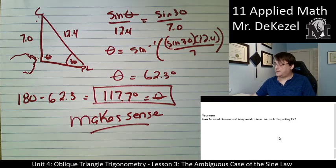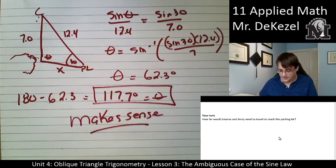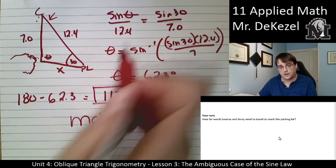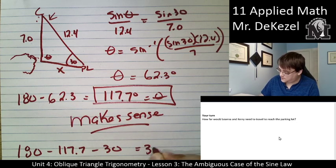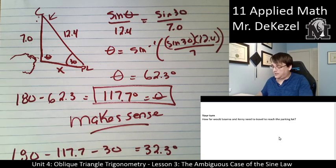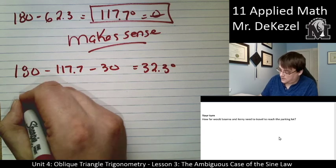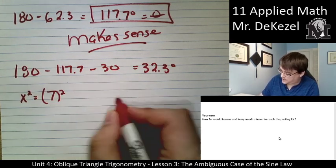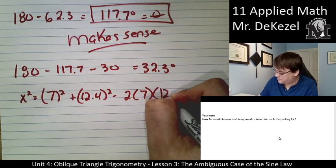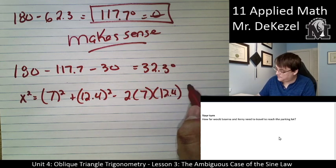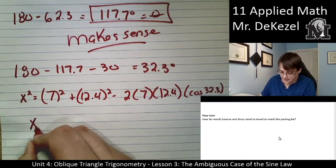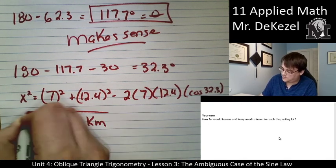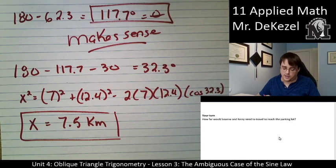Your Turn: how far do Leanna and Carrie need to travel to reach the parking lot? We find the remaining angle: 180 − 117.7 − 30 = 32.3 degrees. Using the cosine law: X² = 7² + 12.4² − 2(7)(12.4)cos(32.3°). Taking the square root, X = 7.5 kilometers. That value makes sense — not 1 kilometer, which would be too small, nor 100 kilometers, which would be too large.